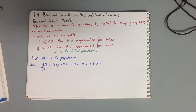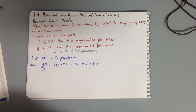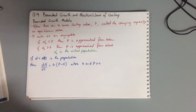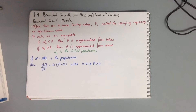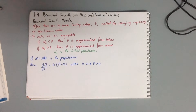In this tutorial we're looking at section 11.4 on bounded growth and Newton's law of cooling. For bounded growth models, there is often some limiting value of P called the carrying capacity or equilibrium. It could be that there's only so many atoms that can decay, giving a lower value, or it could be a population being infected by some disease with a maximum value. We call that value P, our carrying capacity.